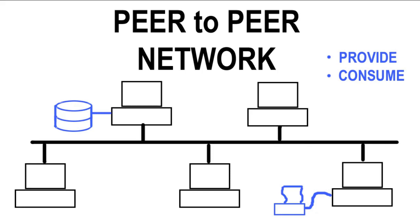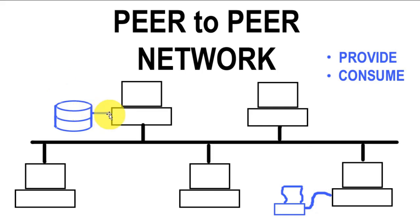Now, there's a lot of benefits to a peer-to-peer network. First of all, it's very easy to implement. You could take a whole bunch of Windows XP workstations, for example, and create a peer-to-peer network — share printers, share storage, without any trouble to configure. All you have to do is share your resources. It's very easy to implement and also very inexpensive. You just install the operating system — there's no special software to purchase.